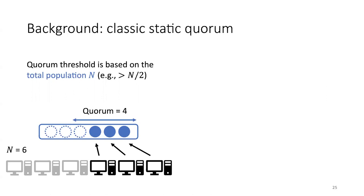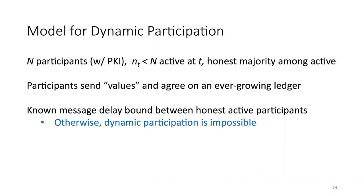Without synchrony, dynamic participation is impossible. There's also a distinction from the 'sleepy model': here we assume a node knows it went offline — it knowingly shuts down its computer. The sleepy model by contrast assumes a node does not know if it's online or offline, which raises questions about both applicability and solvability. That's why I choose not to call it a sleepy model.